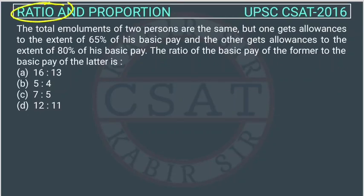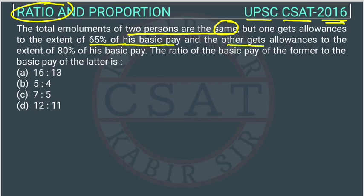This is a ratio and proportion question asked by UPSC in the CSET exam of 2016. The total emoluments of two persons are the same, but one gets allowances to the extent of 65 percent of his basic pay and the other gets allowances to the extent of 80 percent of his basic pay. We have to find the ratio of the basic pay of the former to the latter.